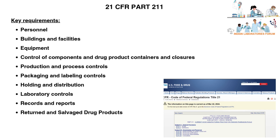Section 9, Records and Reports, details the recording of operations performed, equipment cleaning and use log, component, drug product container, closure and labeling records, master production and control records, batch production and control records, production record review, laboratory records, distribution records, complaint files, etc. Section 10, Returned and Salvaged Drug Products, details returned drug products and drug product salvaging.